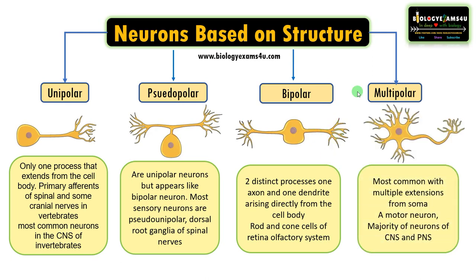Finally, multipolar neurons. As the term indicates, they have three or more processes or extensions that arise from the cell body. Each multipolar neuron contains one axon and multiple dendrites. They are the most common and abundant neurons in the human body, found in both the CNS and the peripheral nervous system. Multipolar neurons are responsible for a wide array of functions including sensory perception, motor control, and learning. A classical example is the Purkinje cell in the cerebellum, which has many dendrites, a soma, and a single axon that arises from the cell body.